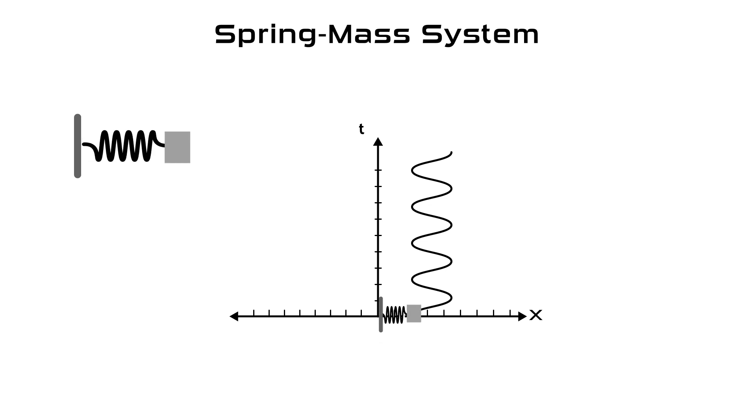To understand this, we draw the space-time diagram of a spring-mass system. In the spring-mass system, the spring tends to shrink and expand over time, causing the mass to perform simple harmonic oscillations.